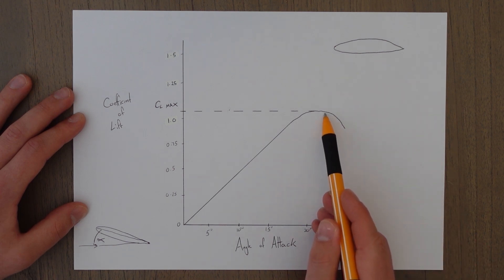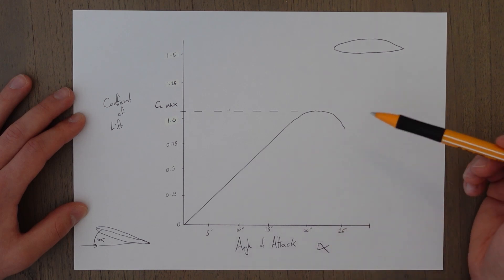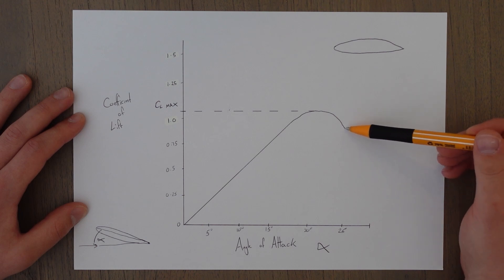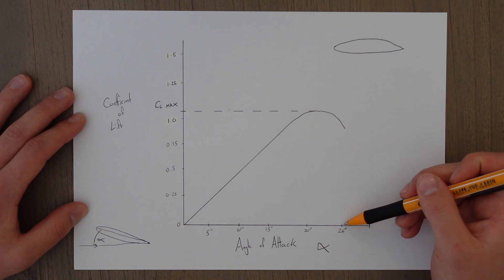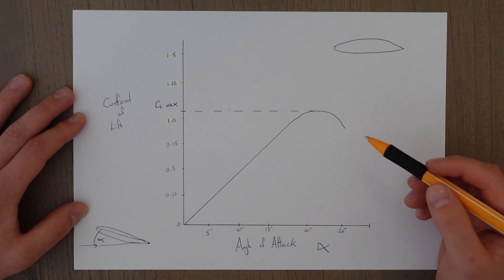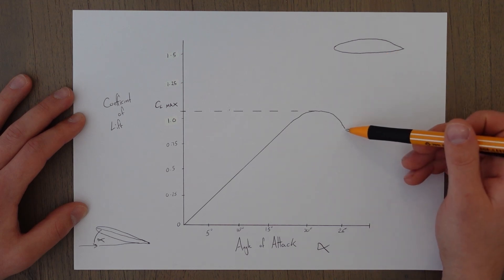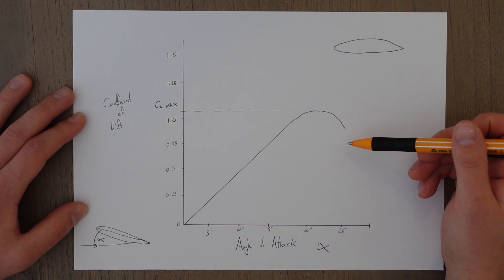This is where separation starts to happen and this is where there's too much separation and the wing is no longer creating any lift. So this point here will always occur at this angle. No matter how fast you're going or any other variables, for this wing design it stalls at roughly 25 degrees angle of attack.